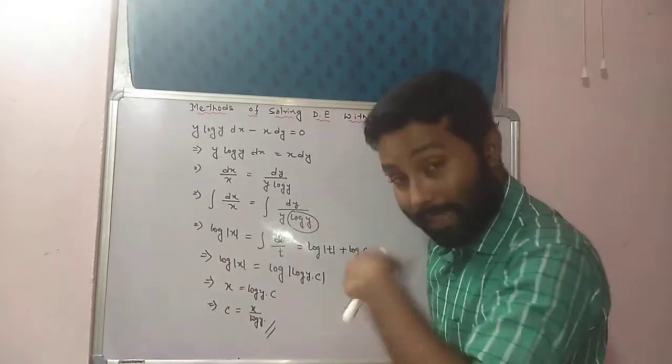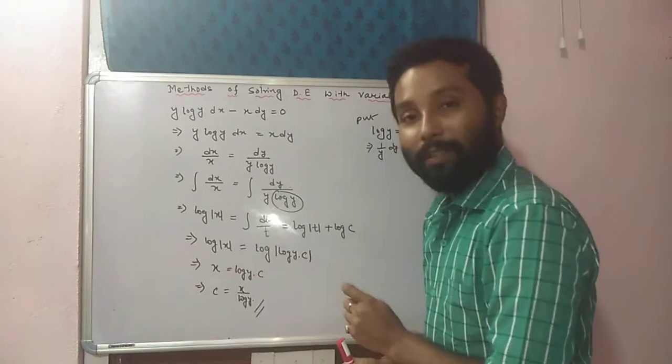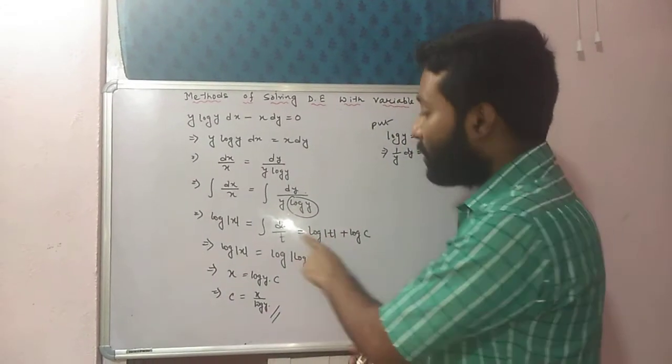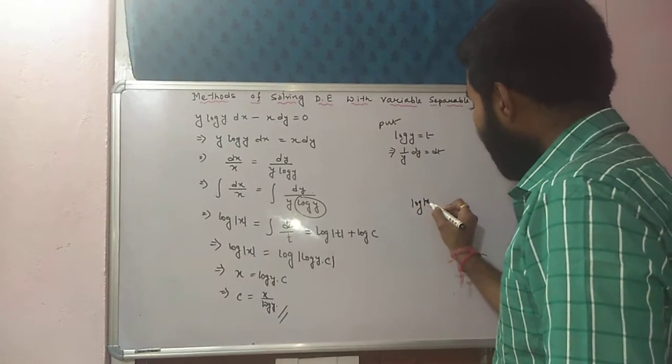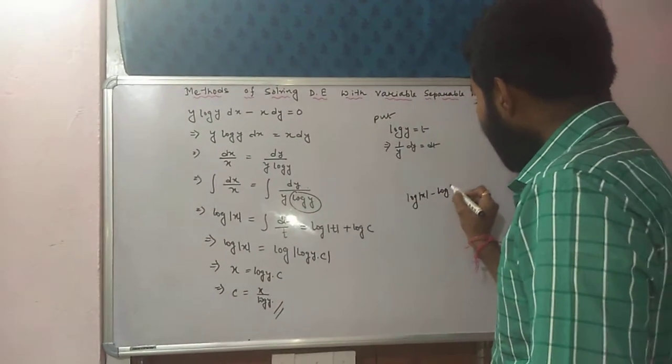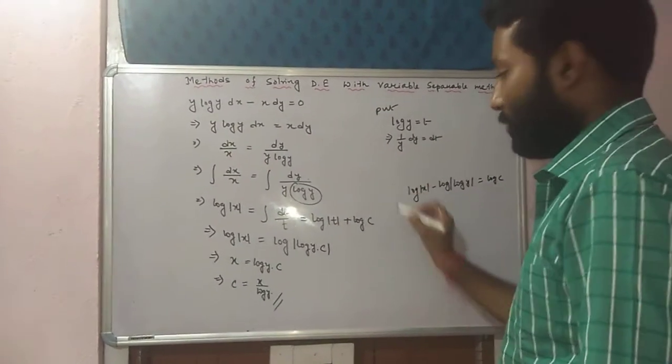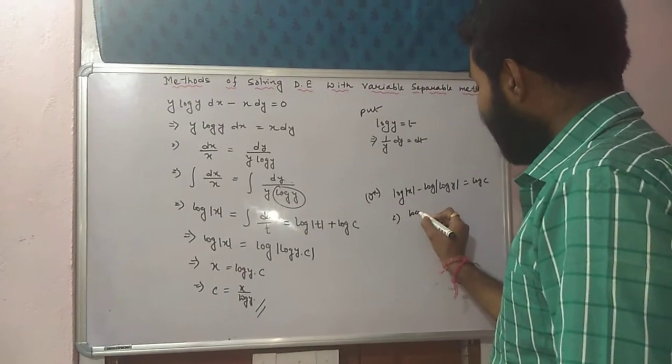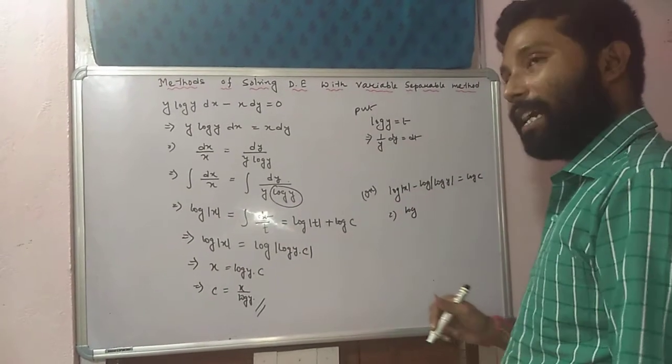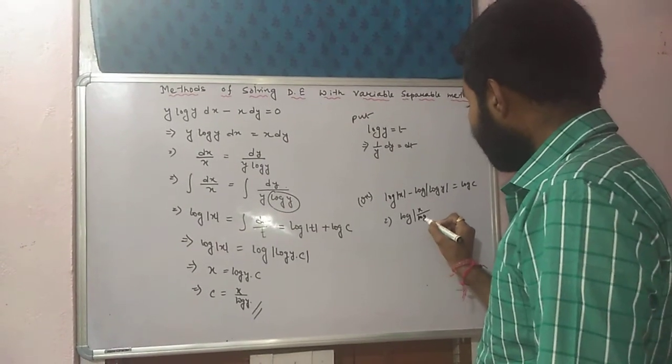in other way you can solve. Log mod t को left hand side में लेके जाओ. Log mod t को left hand side में लेके जाओ. So, then this will be log mod x minus log of log y. This equals log c.